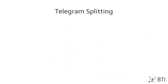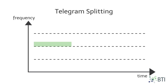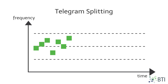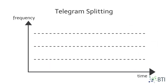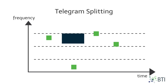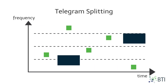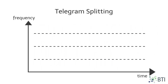4. Telegram Splitting. This technology splits an ultra-narrow band signal into multiple smaller sub-packets. These sub-packets are sent at different times and frequencies, with transmission-free periods in between. Short on-air time and pseudo-randomness minimizes the likelihood of collisions with other sub-packets.